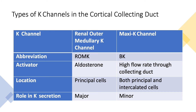Every time urine flows through the collecting tubules, you have some potassium secretion through these channels. The ROMK channels are located in the principal cells, while the maxi K channels exist not only in the principal cells but also in the intercalated cells, which regulate acid-base balance and come in alpha and beta types. The major potassium excretory channel is the ROMK, so its role in potassium secretion is major, while the role of the BK channels is minor.